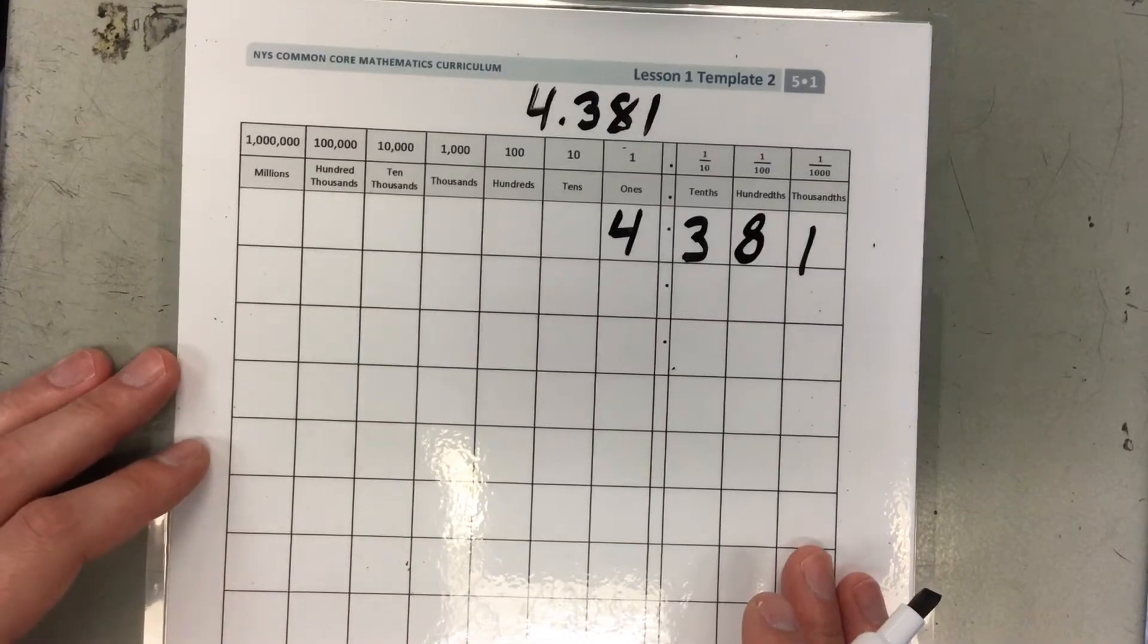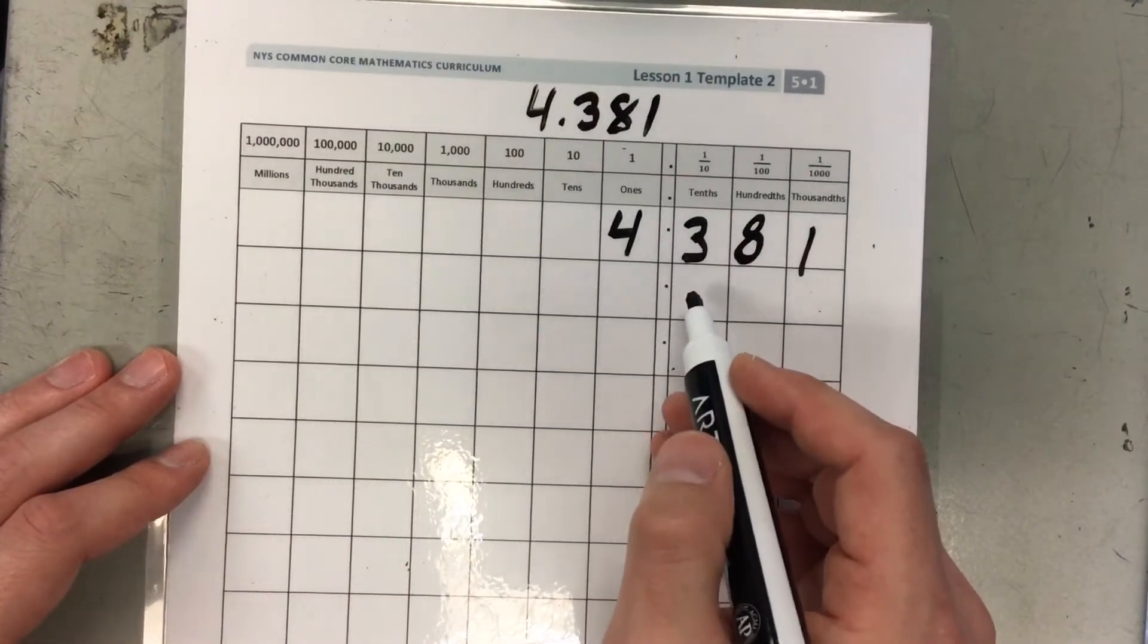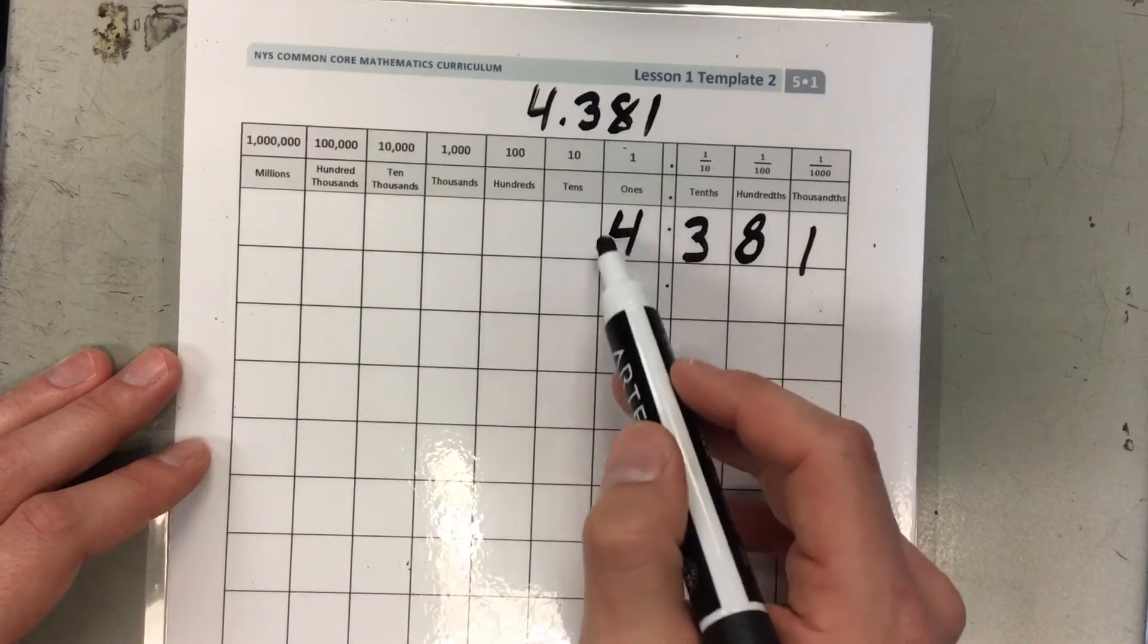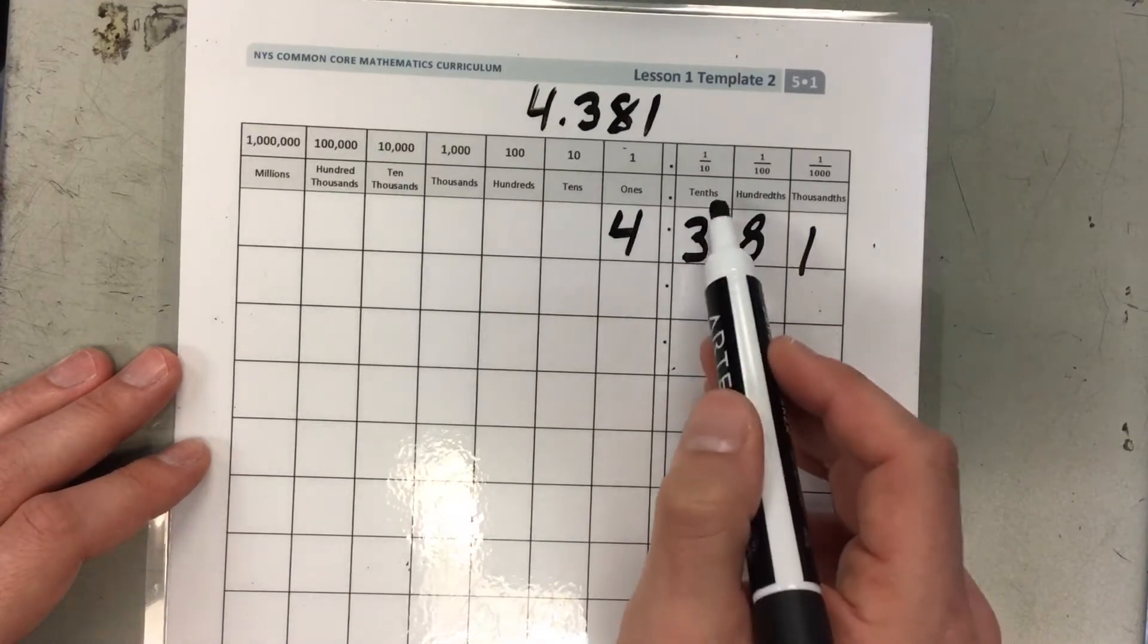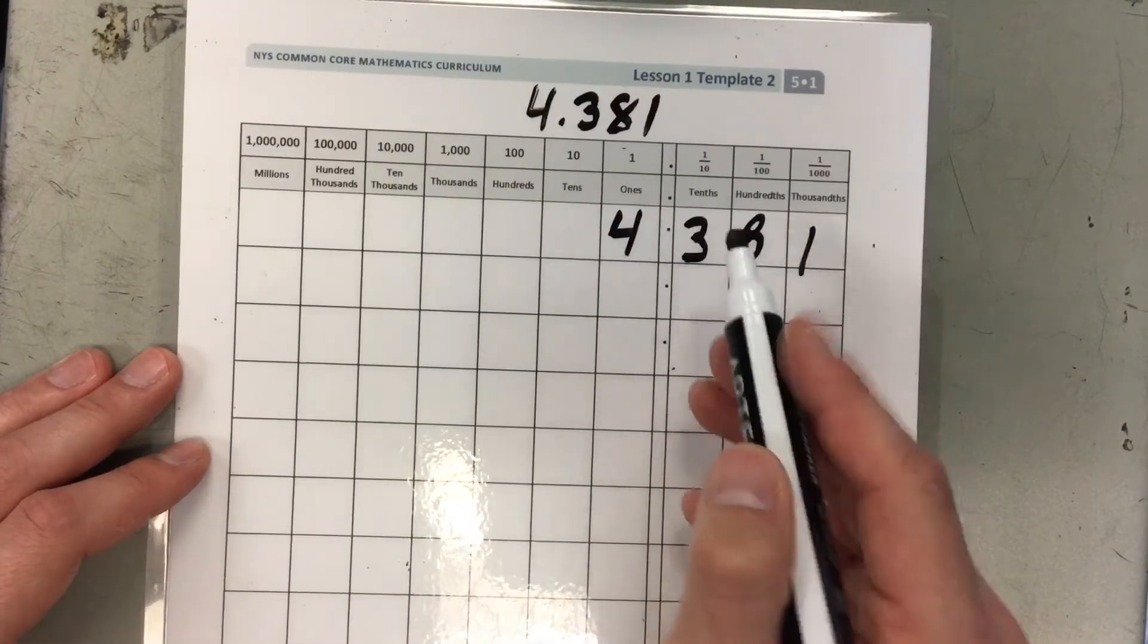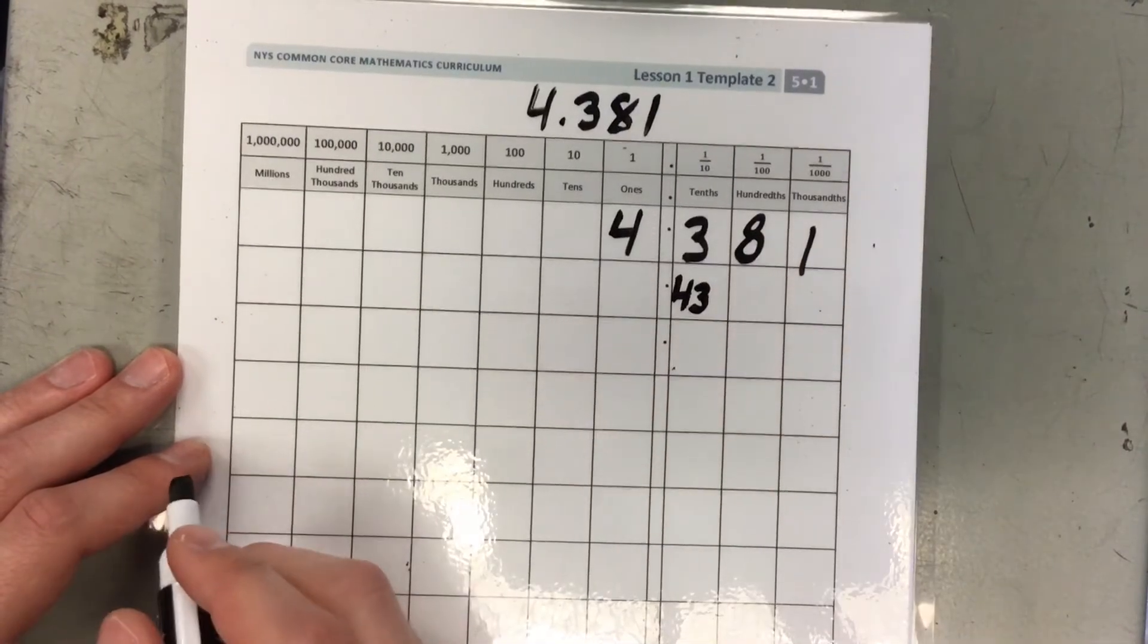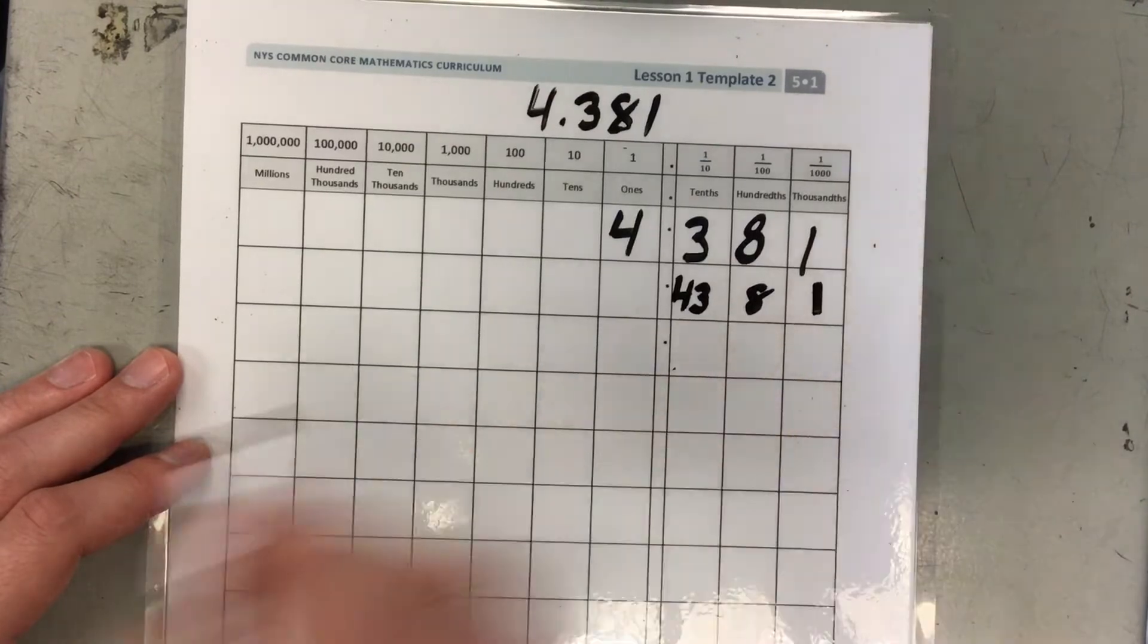And use the greatest number of tenths that we can. So when I'm looking to use the greatest number of tenths, I know that 4 ones is the same thing as 40 tenths. And I have these 3 tenths here. So if I have 40 tenths and 3 tenths, that would give me 43 tenths.